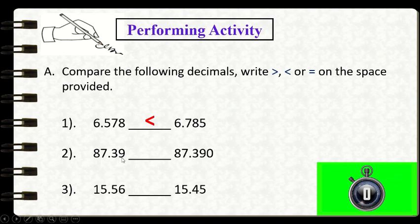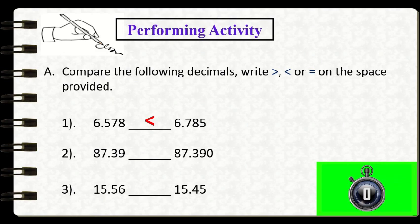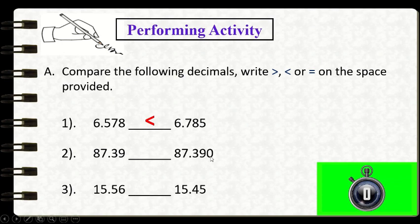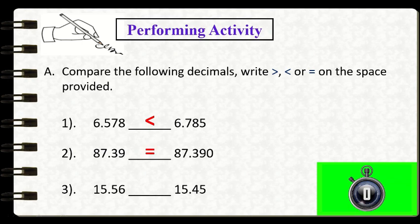We move to the thousandths place. In the first number there is no given digit, while in the second number we have 0 occupying the thousandths place. Zero and nothing are just the same. Therefore, 87 and 39 hundredths is equal to 87 and 390 thousandths, so we will use the equal to symbol.